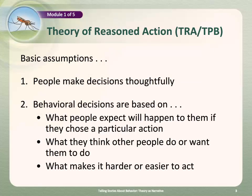Let's start with the theory of reasoned action, or the theory of planned behavior. The basic assumptions of this theory are that people make decisions thoughtfully or rationally, and those decisions are based on what people expect will happen to them if they choose a particular action — will good things happen, will bad things happen, will they feel inconvenienced, will they feel confident and happy? Those decisions are also based on what people think others want them to do, and what makes it harder or easier to act.